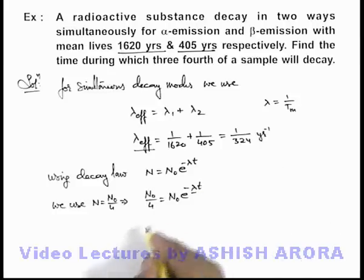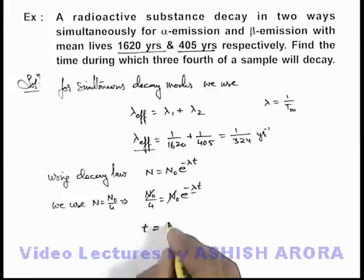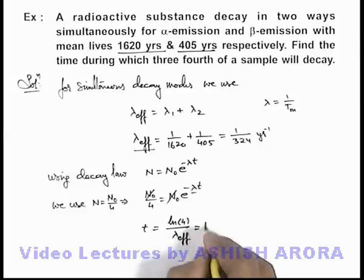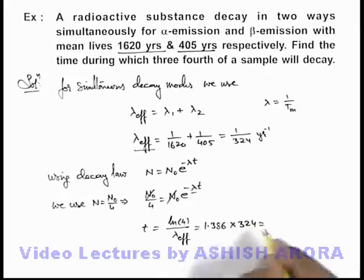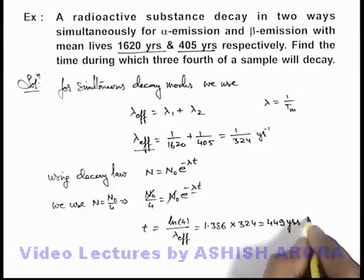On substituting the values, N₀ cancels out and we get t equals ln(4) divided by lambda effective. This gives 1.386 multiplied by 324, and on simplifying we get approximately 449 years, which is the answer to this problem.